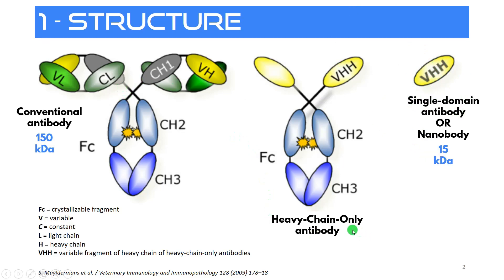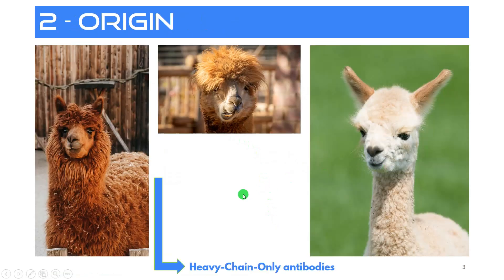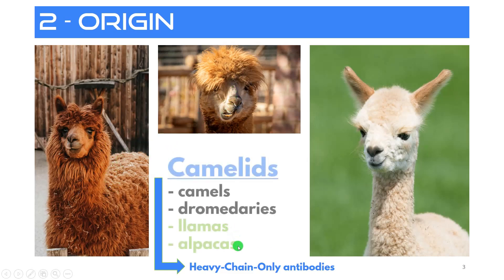These heavy chain-only antibodies in nature, in biology, they originate from a certain species of animals — they're only found in this type of animal. You know these animals probably: they spit in your face, they're sometimes very fluffy, they can make a lot of funny faces. These are llamas and alpacas, and they belong to the family of camelids, which also includes camels and dromedaries.